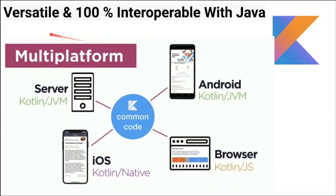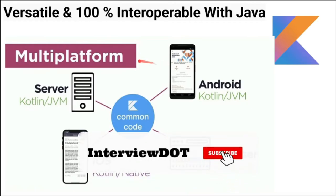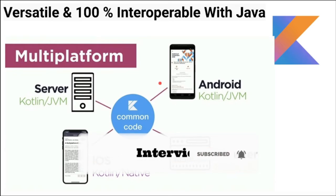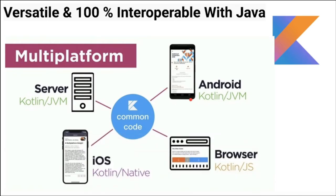As we already discussed, it's versatile and 100% interoperable with Java, meaning we can call Java code from Kotlin and vice-versa. We can also utilize many Java libraries in Kotlin, and using Kotlin we can build different types of products. These are a few advantages I could see from using Kotlin.